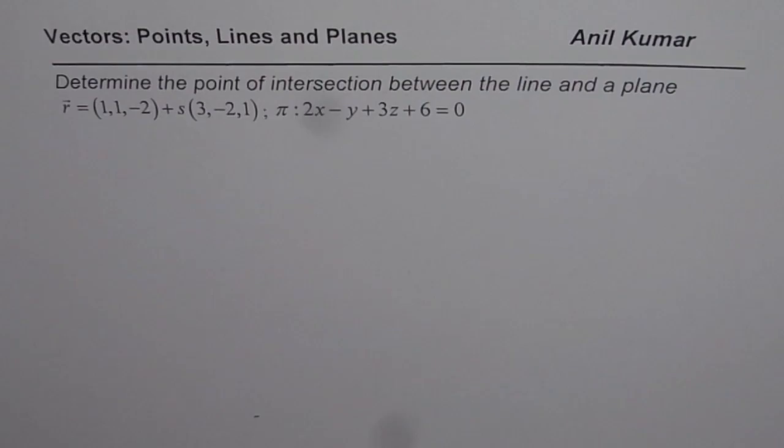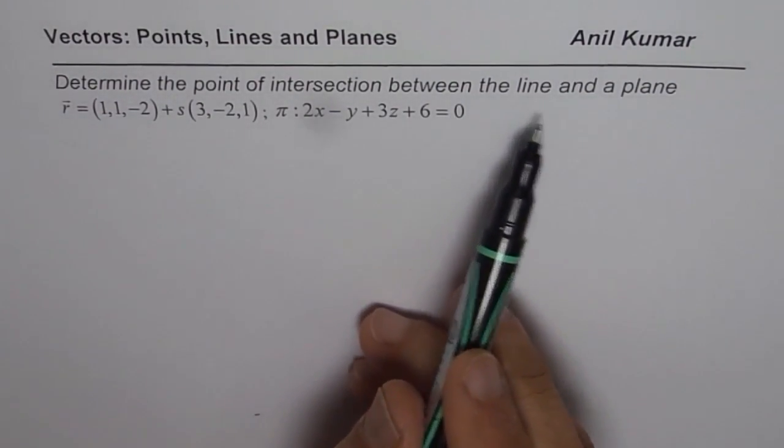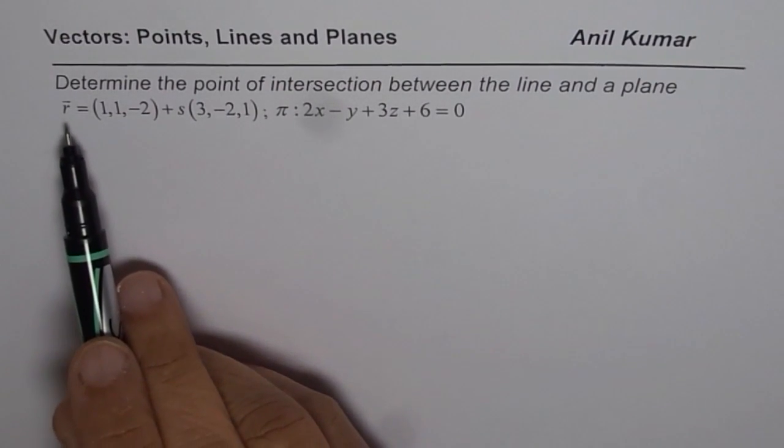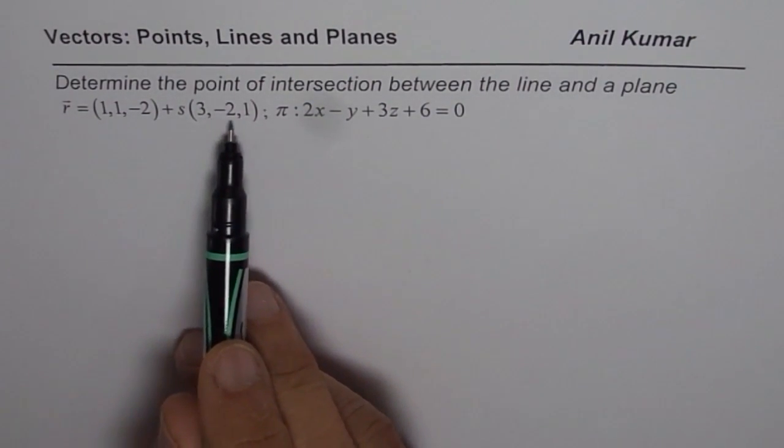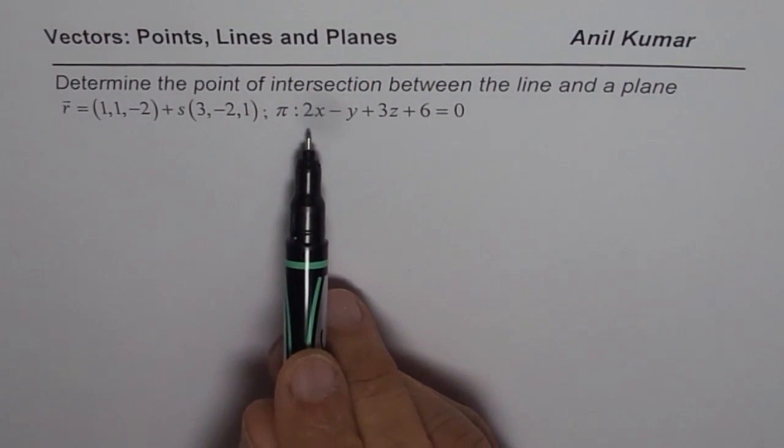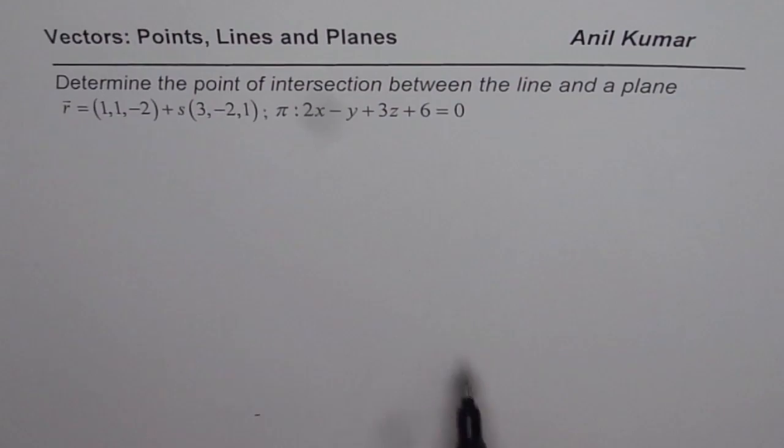Question here is, determine the point of intersection between the line and a plane. R equals 1, 1 minus 2 plus S times 3 minus 2, 1. And the plane is 2x minus y plus 3z plus 6 equals to 0.